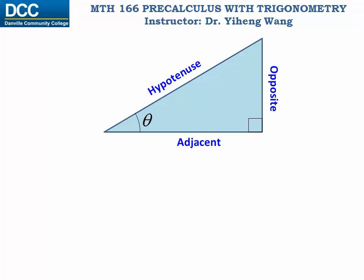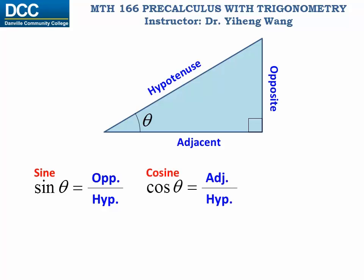Based on this right triangle, sine theta equals to the length of the opposite side divided by the length of the hypotenuse side. Cosine theta equals to the length of the adjacent side divided by the length of the hypotenuse side. And tangent theta also equals to sine theta divided by cosine theta.